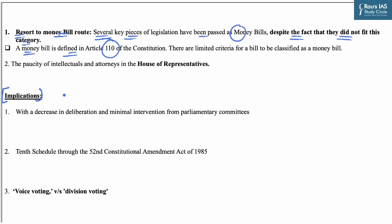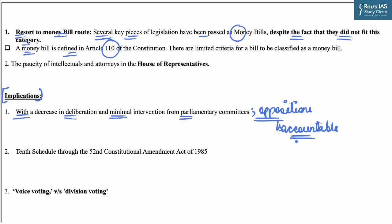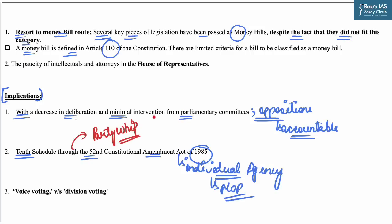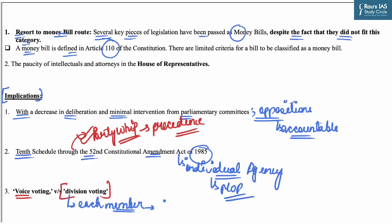With a decrease in deliberation and minimal intervention from parliamentary committees, the opposition's capacity to hold the government accountable also diminishes. Furthermore, the incorporation of the 10th Schedule through the 52nd Constitutional Amendment Act of 1985 has diluted the individual agency of MPs, as decisions made by the party whip override the independent representation of a constituency by its MP. Also, a significant portion of bills is ratified through voice voting, in contrast to the more reliable division voting method, which is capable of recording the response of each member including instances of abstention.